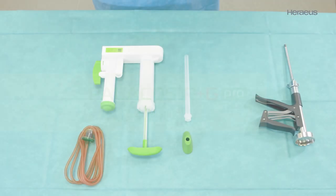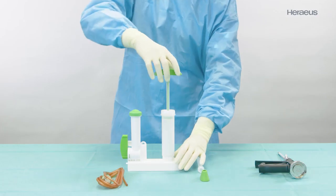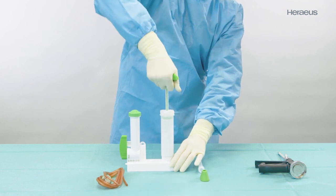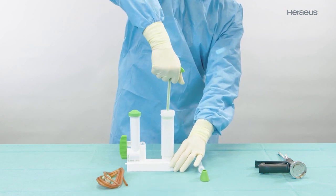Mixing. The green label should be facing towards the user during the mixing process. Push the mixing rod twice through the cartridge to loosen up any possibly compacted powder and return to its initial position.